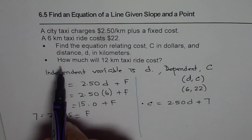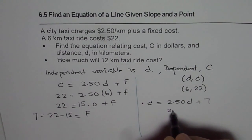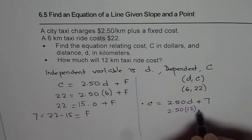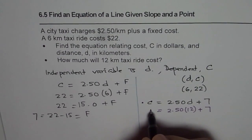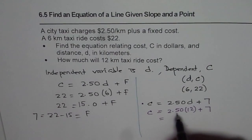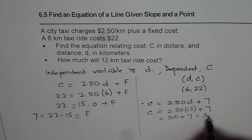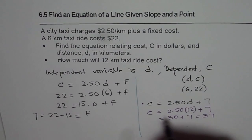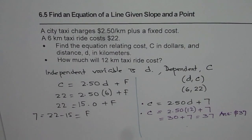Now let's do the second part: how much will a 12 kilometer ride cost? We replace D with 12, so we get C equals 2.50 times 12 plus 7. 2 times 12 is 24 and half of 12 is 6, so 2.50 times 12 is 30. We get 30 plus 7, which is $37. The answer for part B is: it will cost $37 to travel a distance of 12 kilometers on this taxi.